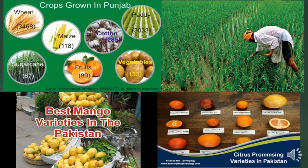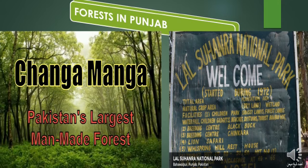These are pictures of different crops and fruits grown in Pakistan and in Punjab. The main crops of Punjab are wheat, maize, sugarcane, and vegetables. Regarding forests, Changa Manga is Pakistan's largest man-made forest, and Lal Suhanra National Park is located in Bahawalpur.